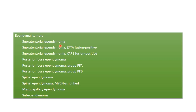Supratentorial ependymomas can either have a ZFTA fusion or a YAP1 fusion. Posterior fossa ependymomas have been grouped as PFA or PFB types. Spinal ependymomas show MYCN amplification or may be myxopapillary ependymoma, typically occurring in the cauda equina. Subependymoma has no site predilection and can occur in supratentorial, posterior fossa, or spinal locations.